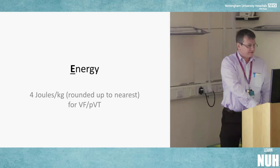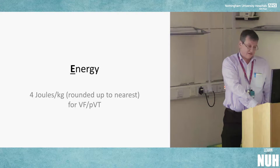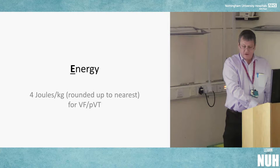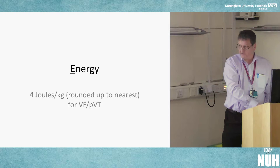Energy: four joules per kilogram rounded up to the nearest setting on your defibrillator in a cardiac arrest situation. If a child still has some output but has SVT or pulseless VT with a pulse and is in shock, it's initially one joule per kilogram and then two joules per kilogram.